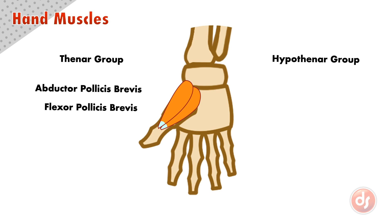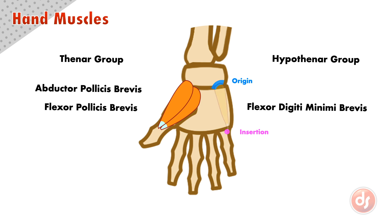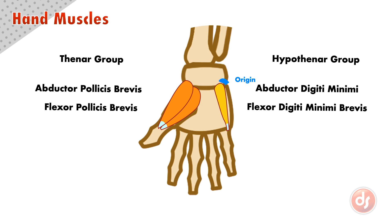The hypothenar group is also made up of two muscles. The first is the flexor digiti minimi brevis. It originates on the carpal mass below the last two fingers, and inserts into the side of the first phalange of the pinky. The second muscle is the abductor digiti minimi. It originates on the edge of the carpal mass below the pinky, and inserts right next to the flexor digiti minimi brevis on the side of the pinky.